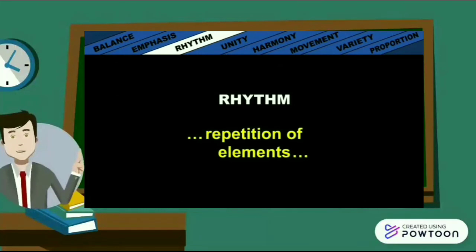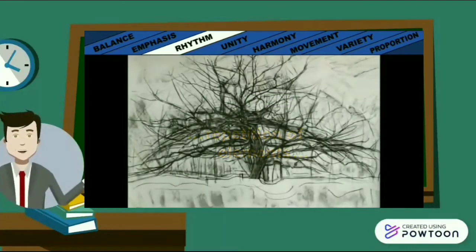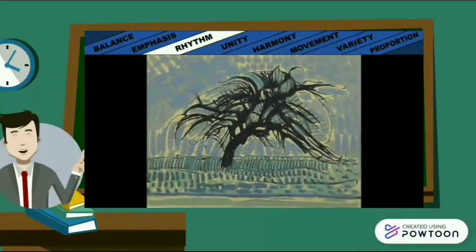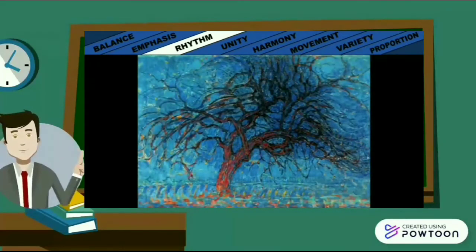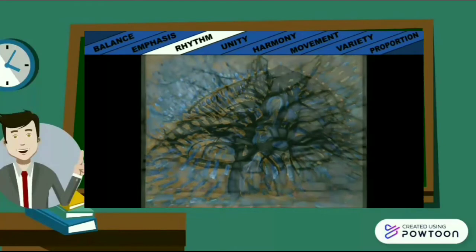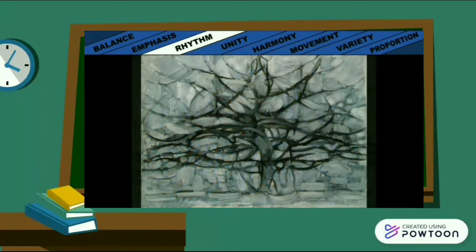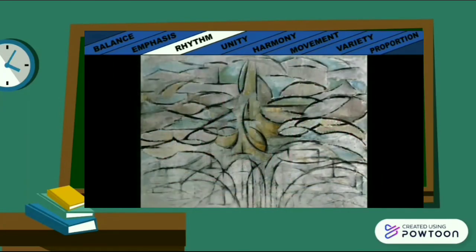Rhythm is a principle of design. Rhythm involves the repetition of elements to create the illusion of movement. In this series of trees by Piet Mondrian, the artist focused less on the likeness of the tree and more on the repeating shapes and directions of the branches, demonstrating the principle of rhythm.